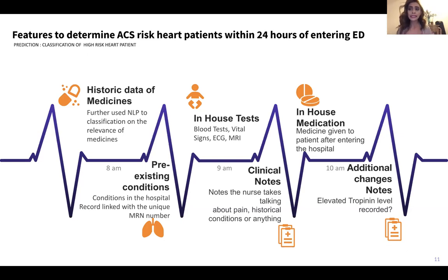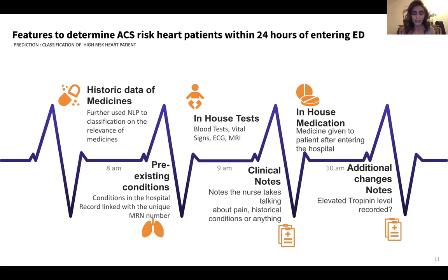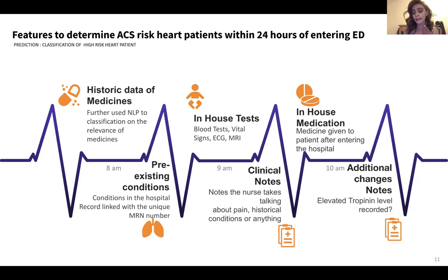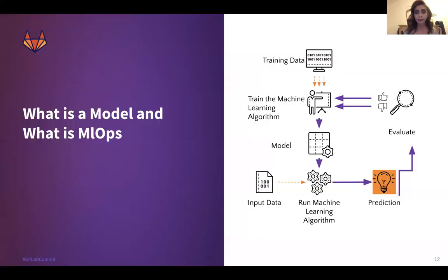For this experiment, we take data from an EMR — an electronic medical record system — looking into the historic data of medicines the patient is taking, any pre-existing conditions, in-house tests, clinical notes, in-house medication, and any additional change notes. All of these are extracted as variables and features built into the model to be able to predict.